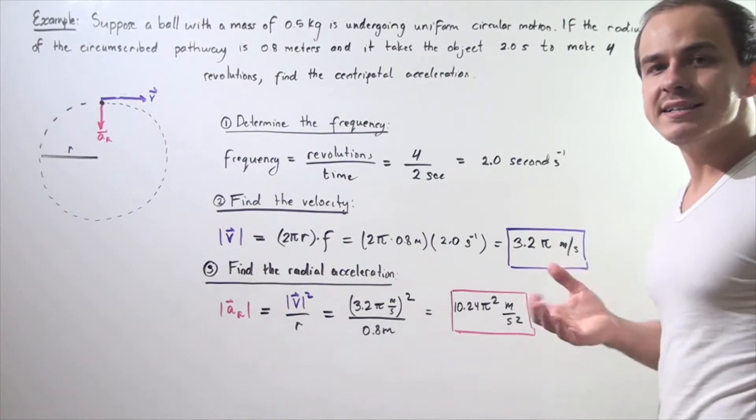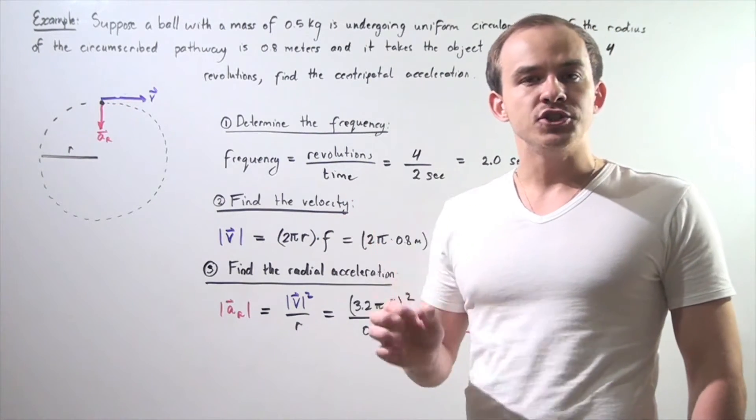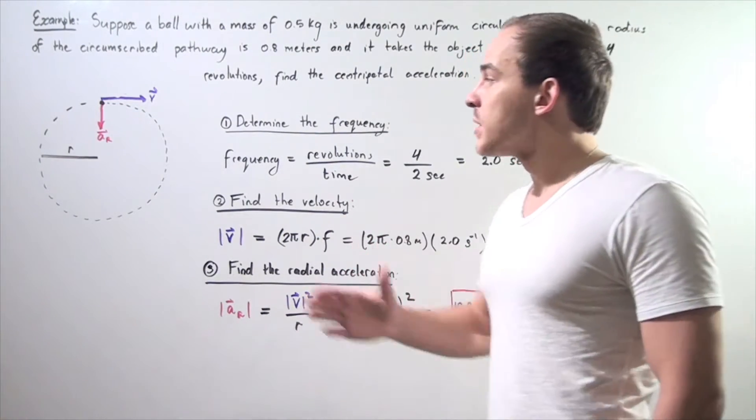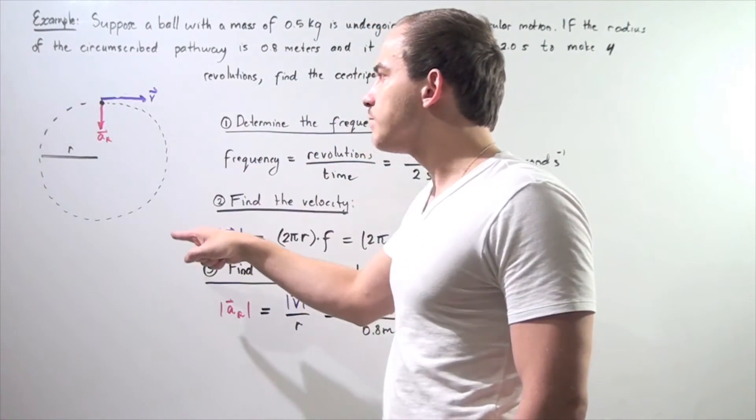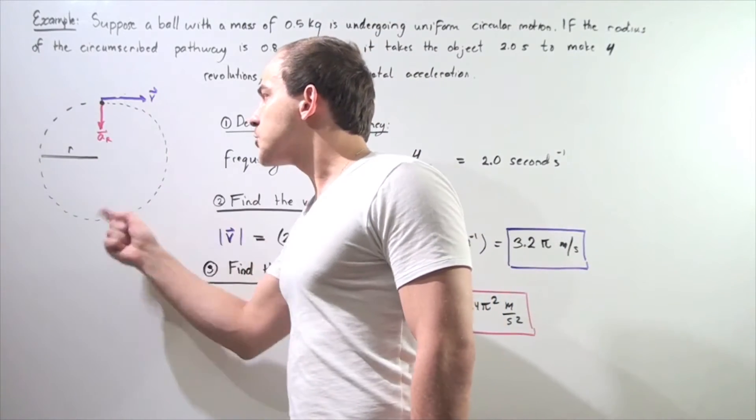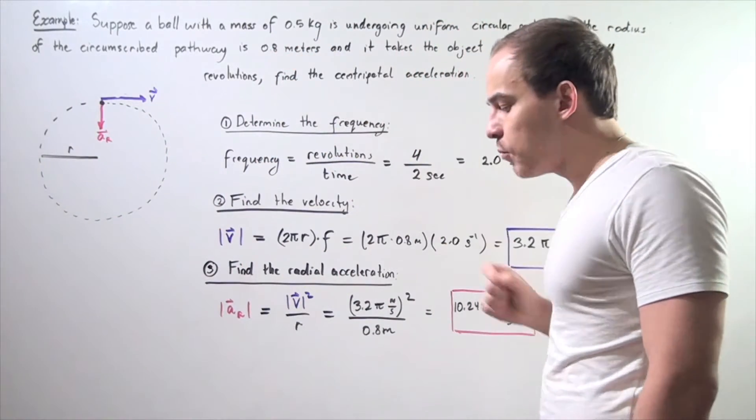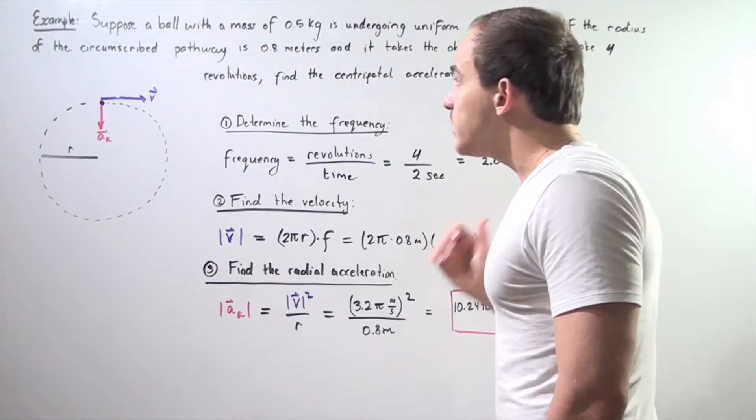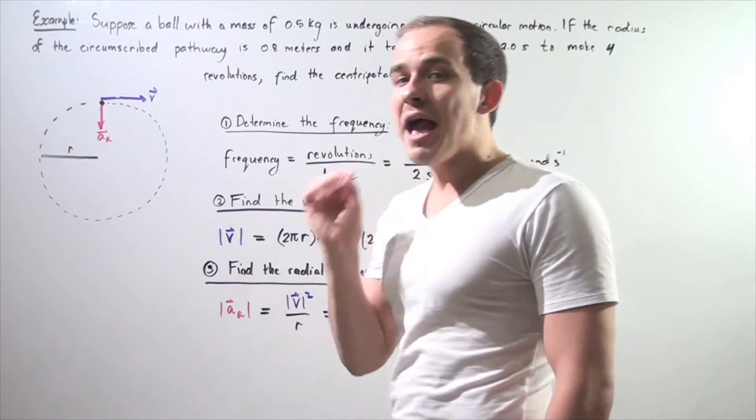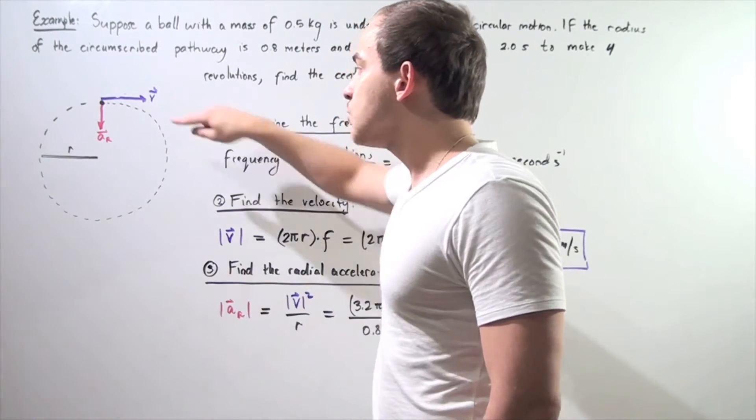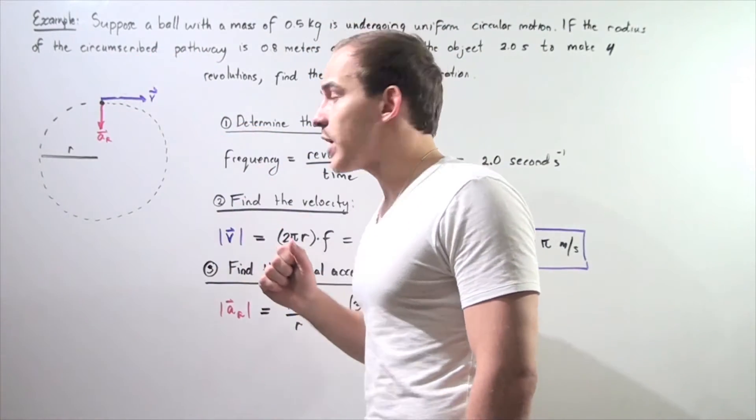what is the centripetal acceleration of our object? The object is undergoing uniform circular motion with a radius of 0.8 meters. Given this information, we want to find the magnitude of our centripetal or radial acceleration.